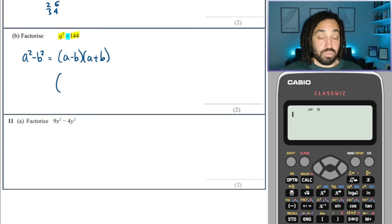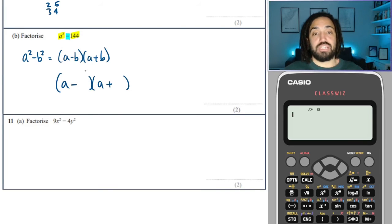Okay, so what do we do to factorize? Well, we take the square root of A squared, which is just A, so that goes in the first slot there.